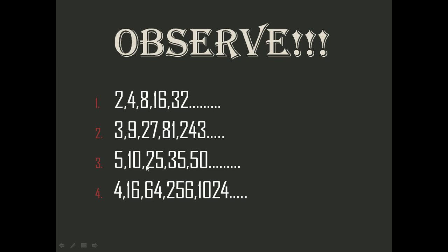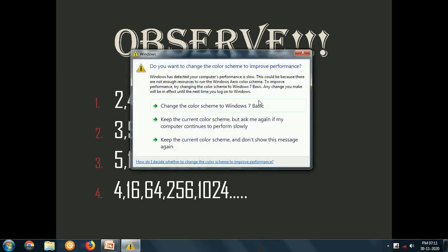In series three: 5 becomes 10 if multiplied by 2, and 10 multiplied by 2 should give 20 — but it is given as 25. So the multiplying constant between the first and second term is 2, but applying the same constant gives 20, not 25. The rule is broken here. So the third series is an example that does not follow a proper pattern.